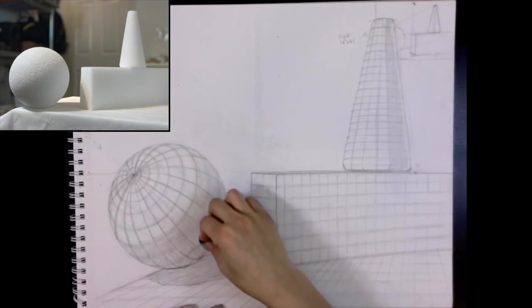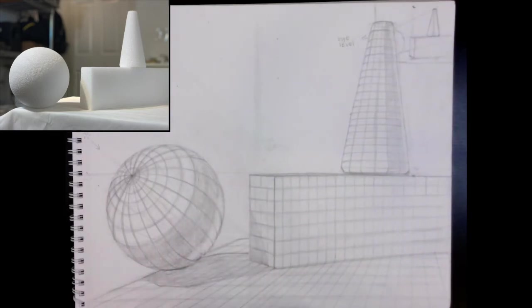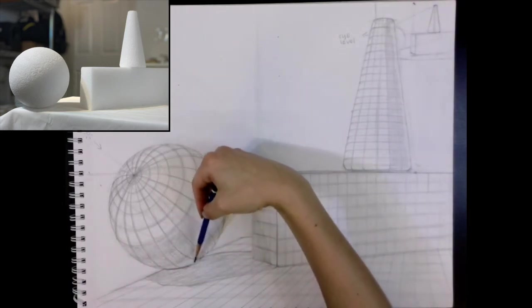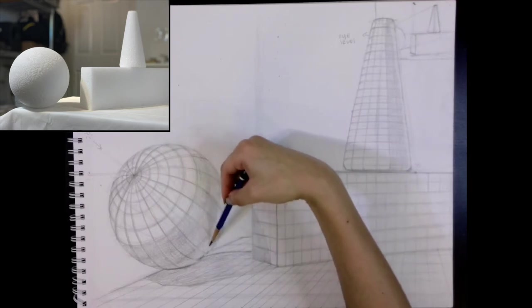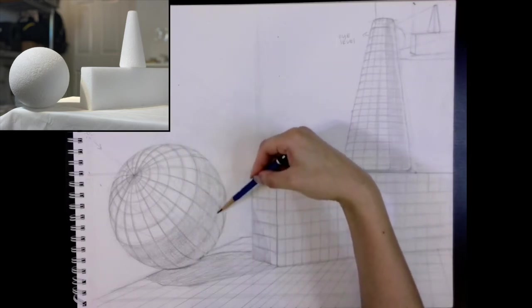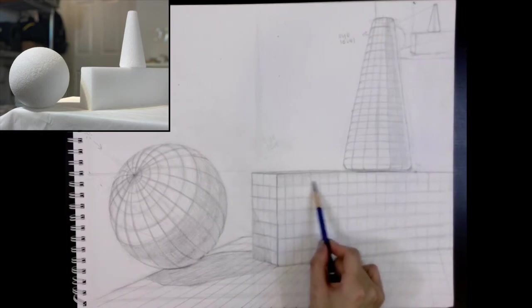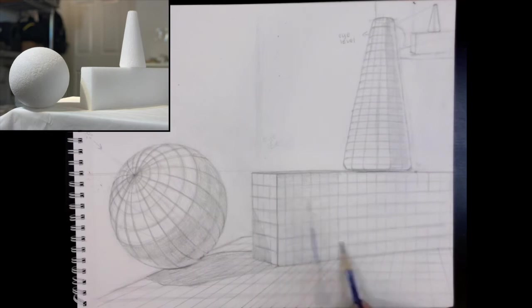And you can do the same thing with the cast shadow. I'm using my kneaded eraser to erase the reflected light which is underneath that core shadow. Not only should you be erasing but go ahead and put a light layer of shading there so it's not completely white but just a single tone lighter than the core shadow.